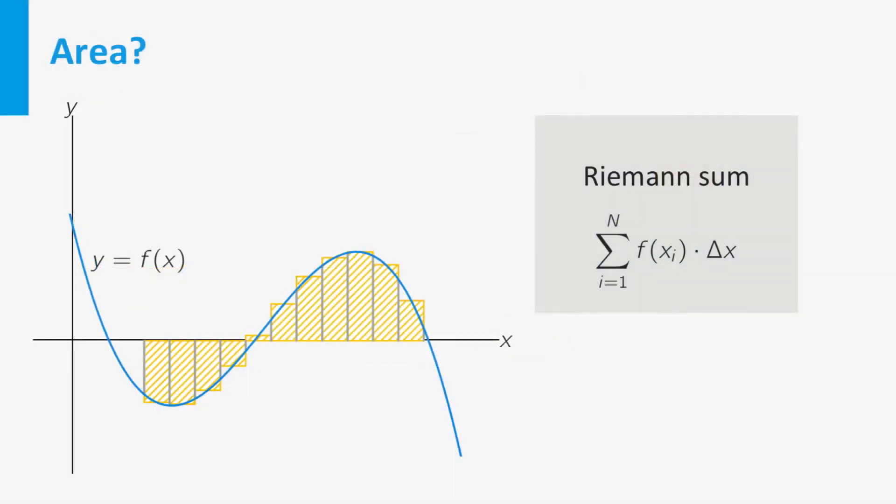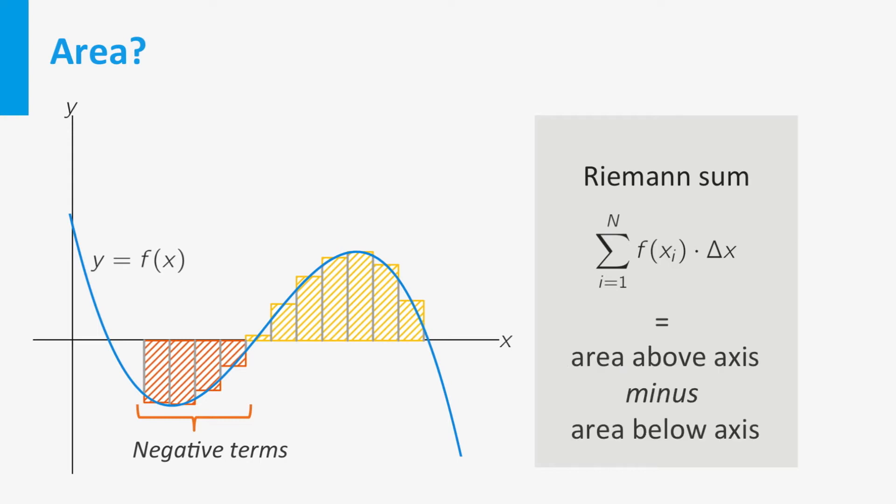Let us first look at the Riemann sum. At points where the function is negative, the corresponding terms in the Riemann sum will also be negative. Therefore, the Riemann sum represents the total area of the rectangles above the axis minus the total area of the rectangles below the axis.